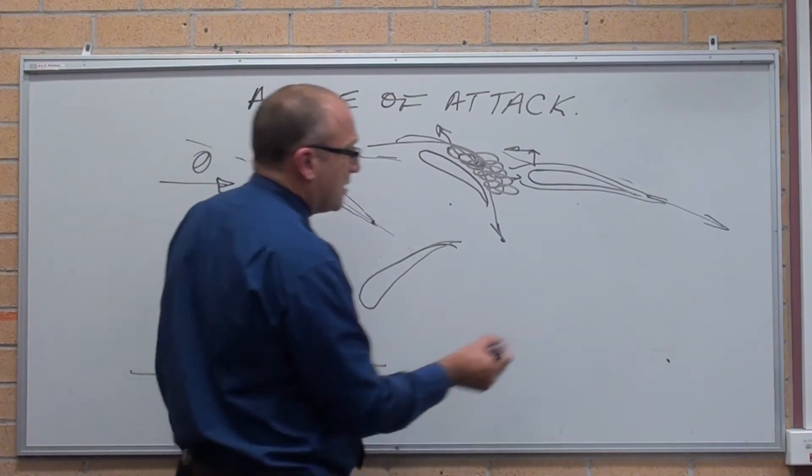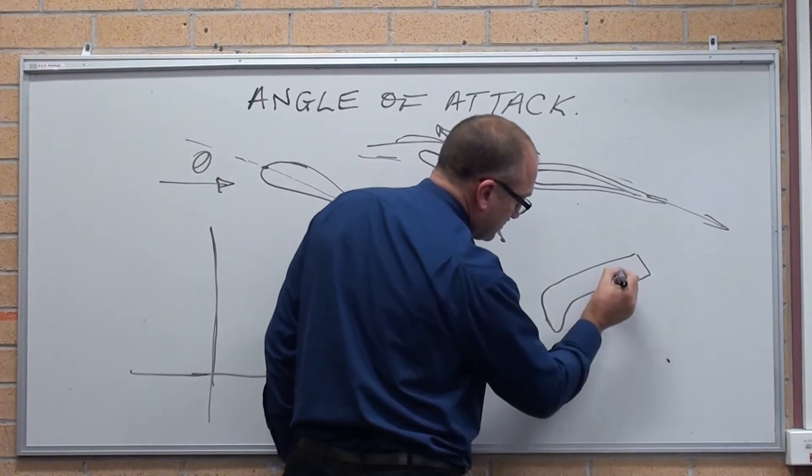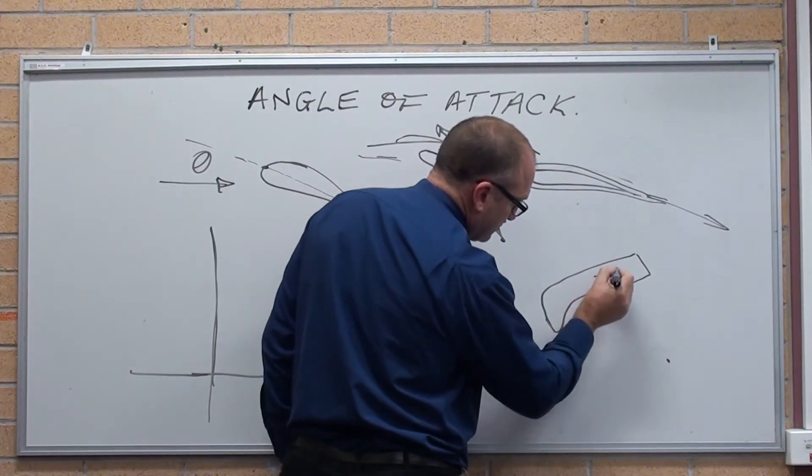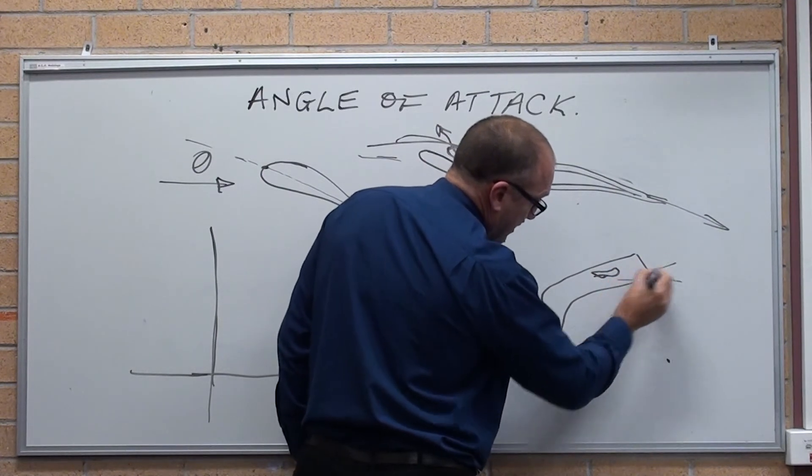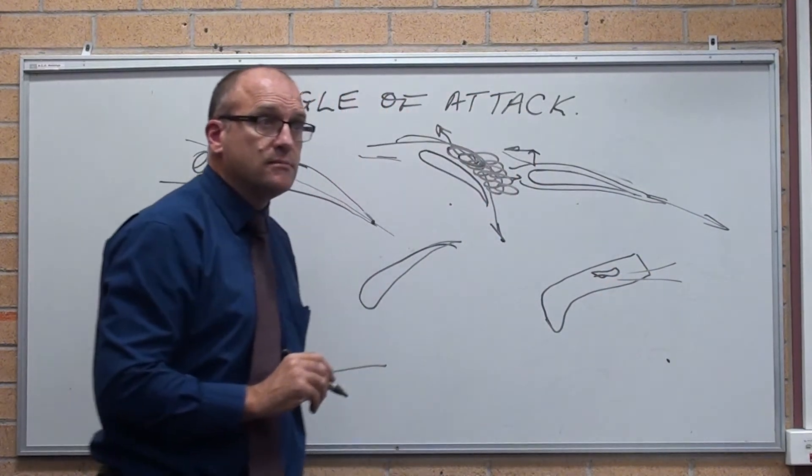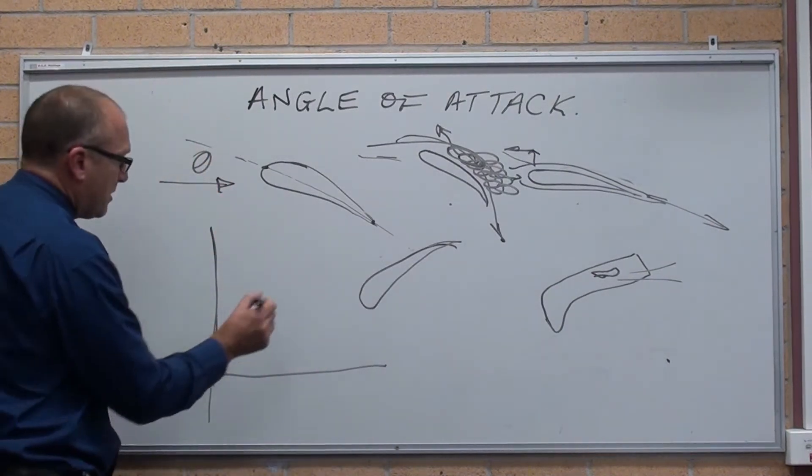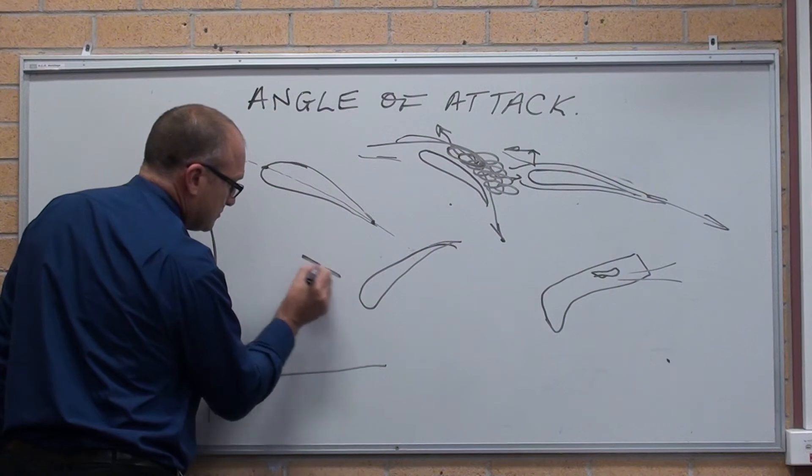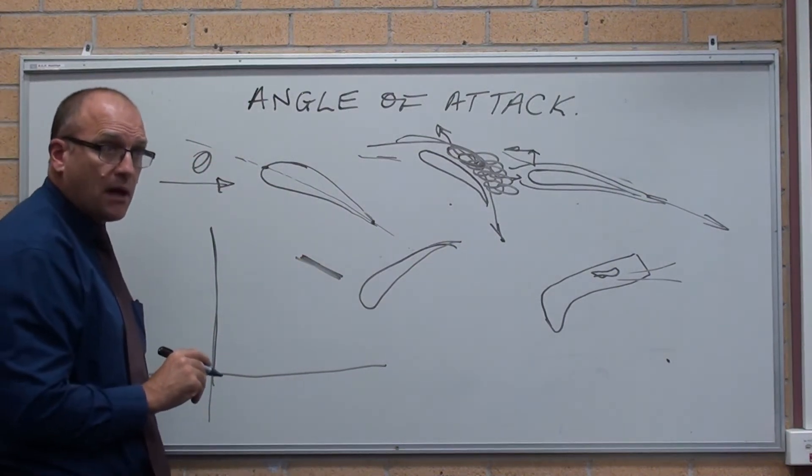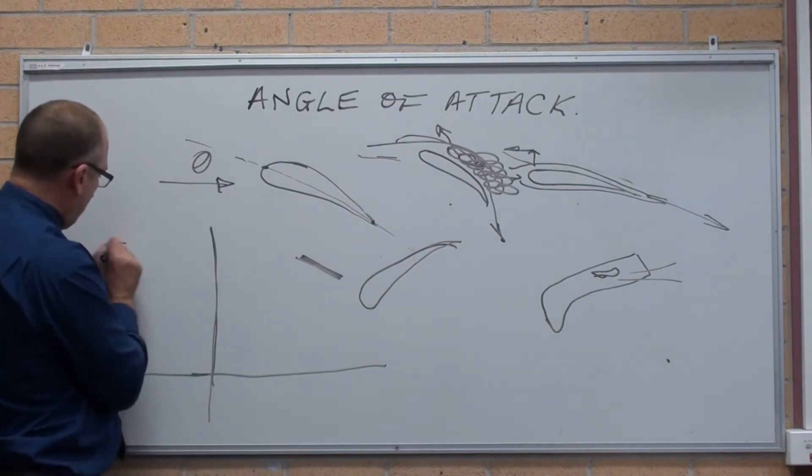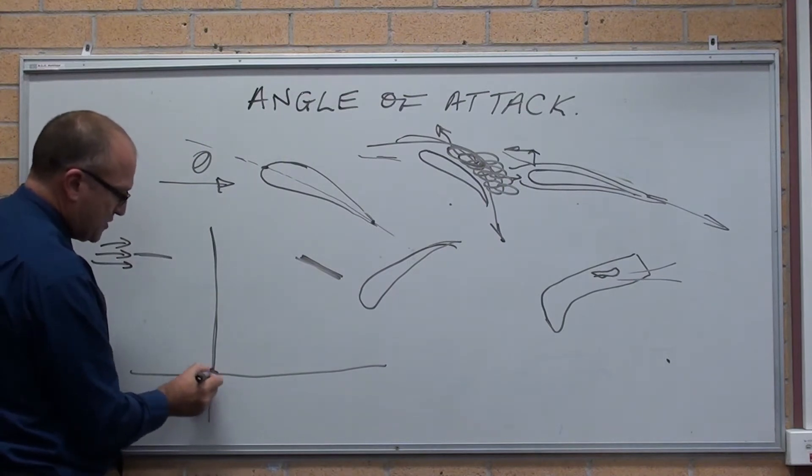A plane flying upside down, there is the wing there. It still has a slight angle of attack. Okay, that will generate lift. If I've got a flat plate, perfectly flat plate, zero camber. If it's traveling parallel to the airflow, lift is zero.